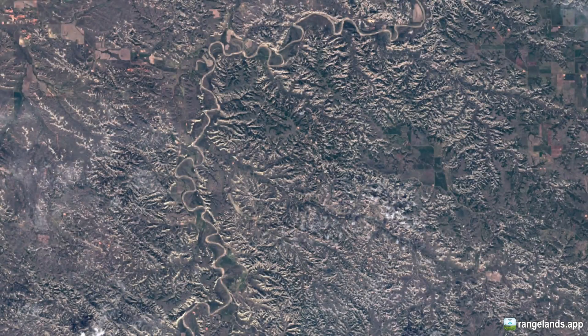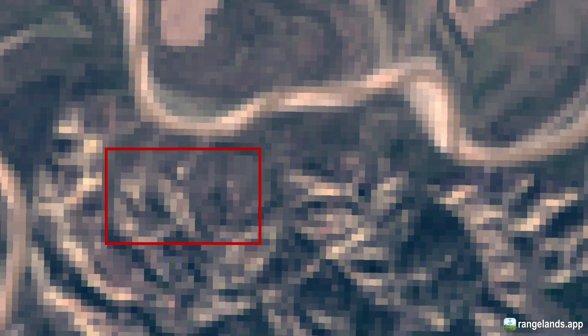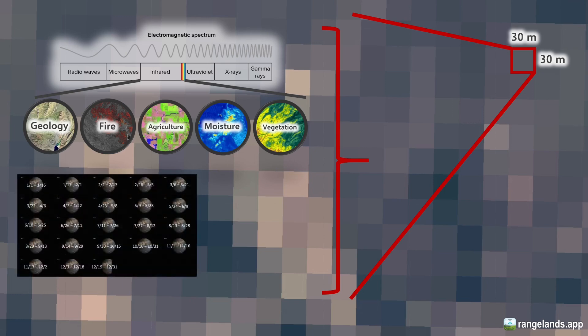Every pixel within a Landsat image is a measurement recorded for a finite area and a precise location. These images are also measurements of reflectance from the sun, each for a finite area — specifically 30 meters by 30 meters, roughly the size of the infield of a baseball diamond. Each measurement captures all the different portions of the electromagnetic spectrum, and there have been measurements for each pixel almost 23 times a year for every year. These factors together describe the immensity and power of the Landsat dataset for vegetation analysis.